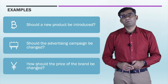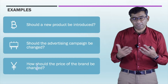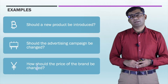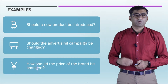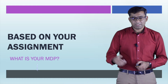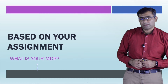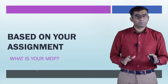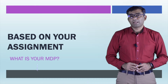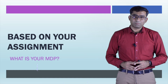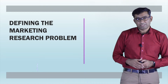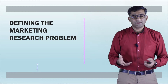When a problem occurs, it gives you some signals. Through those signals, management realizes it is time to change — whether to introduce a new product, change marketing strategy, introduce a new feature, or change the price of an existing product. These are all different types of management decisions. Now think about your own assignment — what is your management decision problem? Write it down.